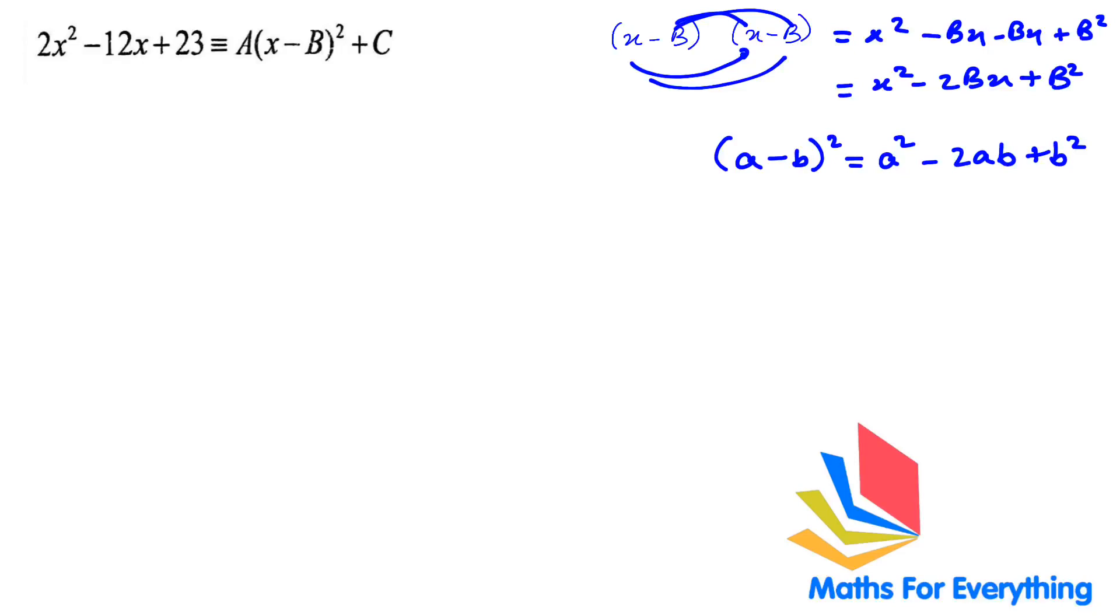So now that we have expanded the bracket, let's replace it here. In place of (x - b)², we are going to write x² - 2bx + b² + c.